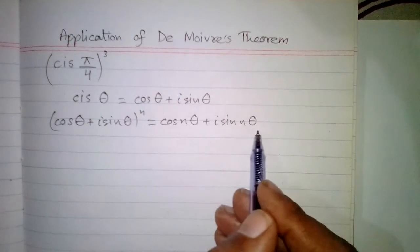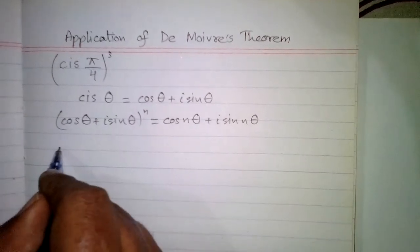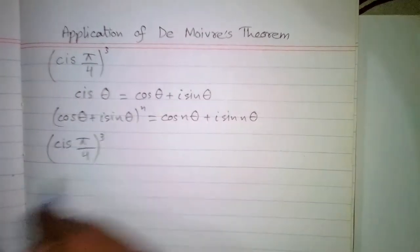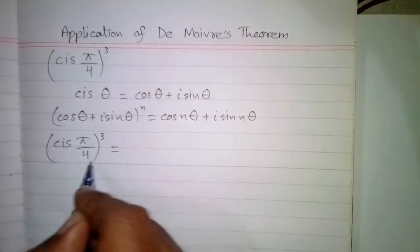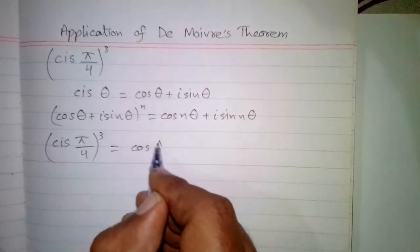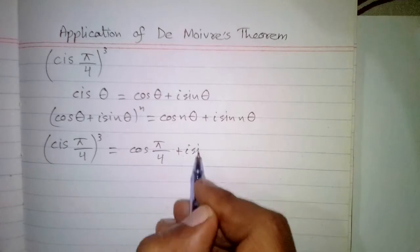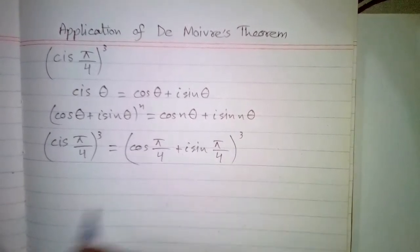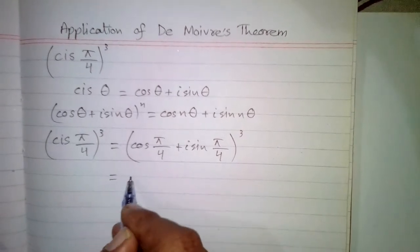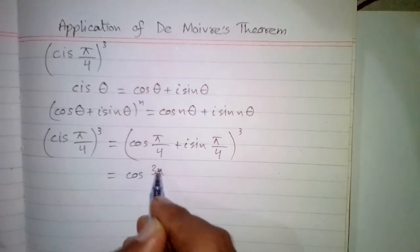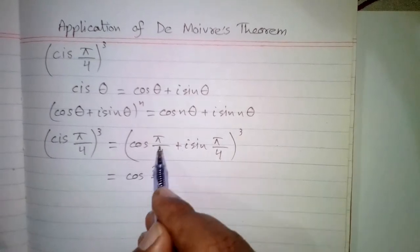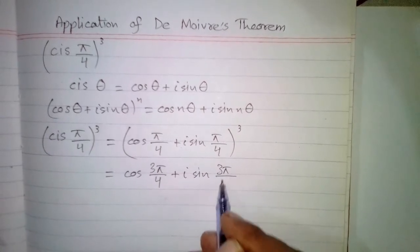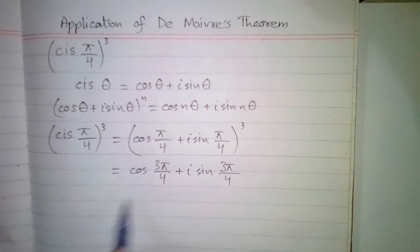Now we have to find cis(π/4) raised to the power 3. cis(π/4) means cos(π/4) plus iota sin(π/4), raised to the power 3. Applying De Moivre's theorem, we multiply 3 by π/4 to get cos(3π/4) plus iota sin(3π/4).